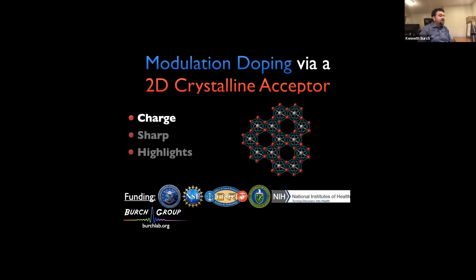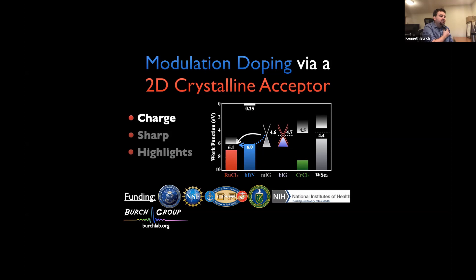I'll then rapidly switch to talking about how the unique band structure of ruthenium chloride allows us to use it as a crystalline acceptor in the same way you would use an acceptor dopant. Therefore we can achieve modulation doping, namely doping remotely in a 2D material from where the dopant layer is coming. The way that works is that ruthenium chloride has a very deep vacuum level. Here I'm showing you the work function for a variety of 2D materials. Ruthenium chloride, the vacuum level is 6 EV, roughly lined up with that of HBN.